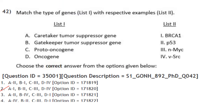Match the type of genes with their respective elements: Caretaker tumor suppressor and gatekeeper tumor suppressor. Gatekeepers directly inhibit tumor growth or promote tumor death; caretakers maintain genetic stability and minimize mutation rates. BRCA1 is a caretaker tumor suppressor; P53 is a gatekeeper tumor suppressor; N-myc is a proto-oncogene; v-Src is an oncogene. Answer: A1, B2, C3, D4. Option 2.